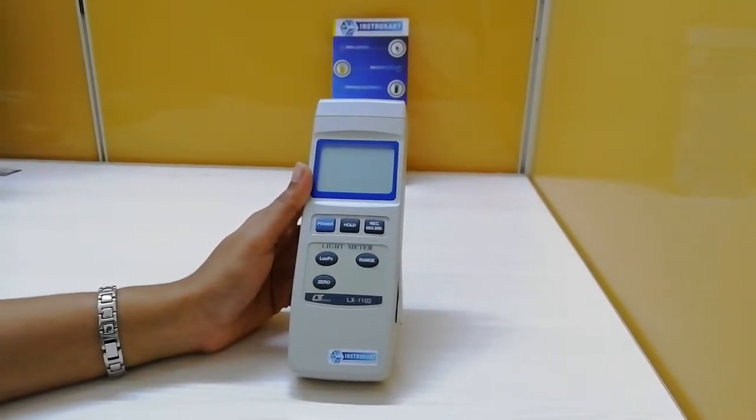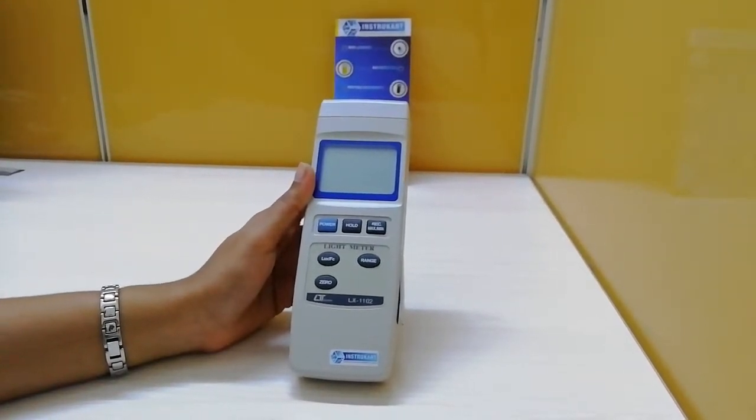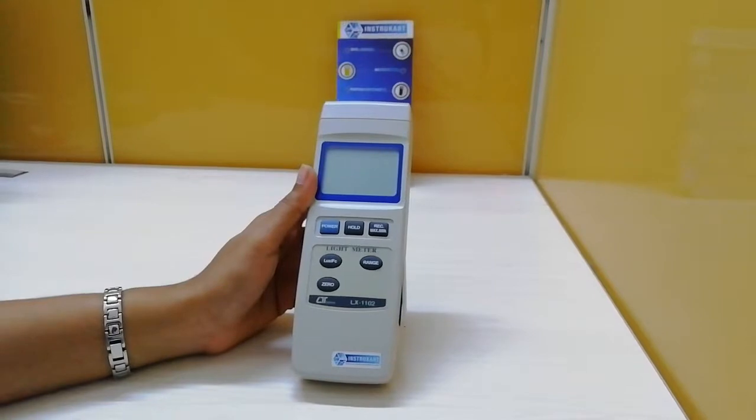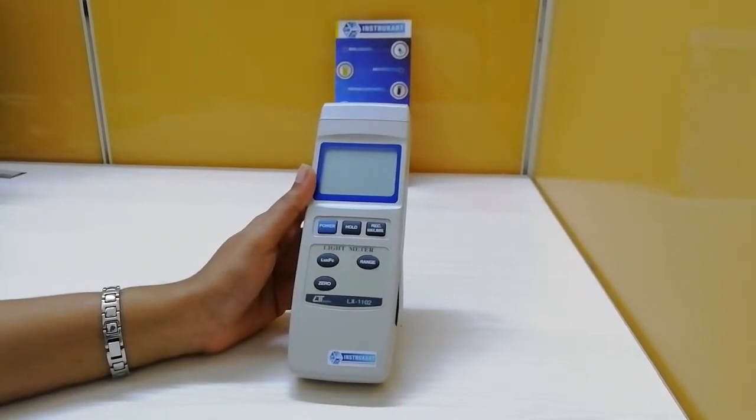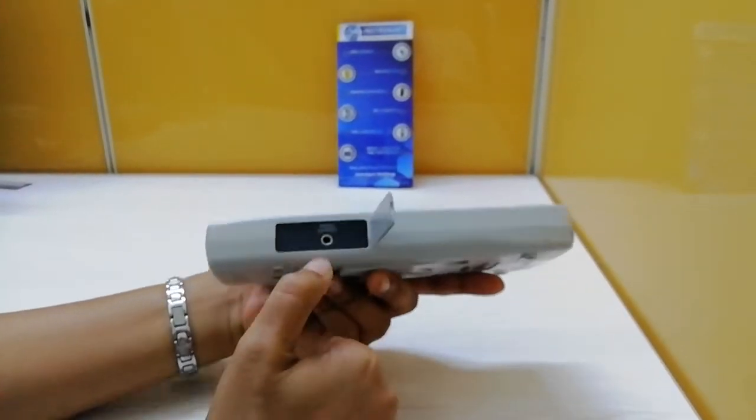This includes auto power off, though you can use manual power off as well, plus over and under range indication. Data output is available through RS232 serial output, which you can see here.